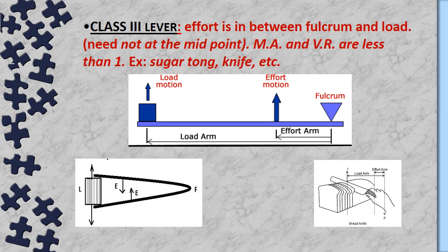In a Class 3 lever, the effort is in between the fulcrum and load. It is not necessary that the effort is exactly at the midpoint. The effort arm is always less than the load arm, since effort is between the fulcrum and load. Therefore, mechanical advantage is always less than 1. Examples are sugar tongs and a knife. In the diagram, the effort is applied between the fulcrum and load.